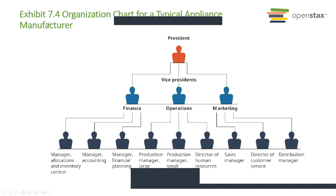This is a very good organizational chart, an example for a typical appliance manufacturer. What this chart shows is the chain of command — the president is on top, then the vice presidents, and under the vice presidents are the departments: finance, operations, and marketing. Under each of those departments are different job categories.